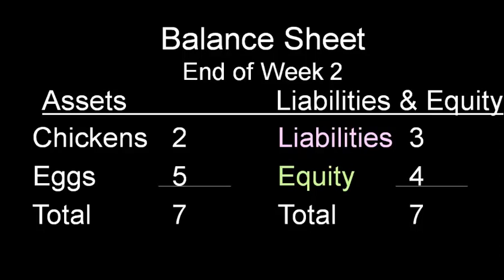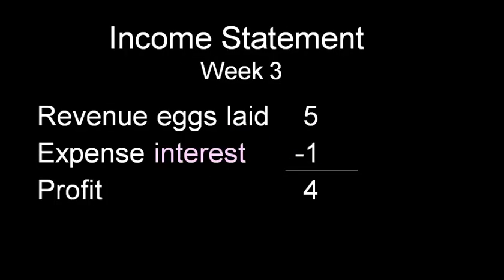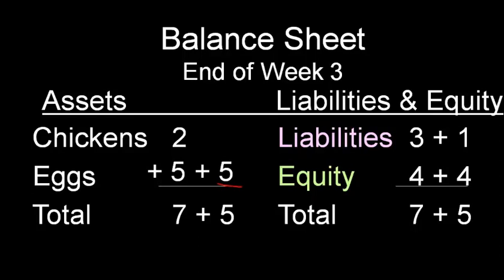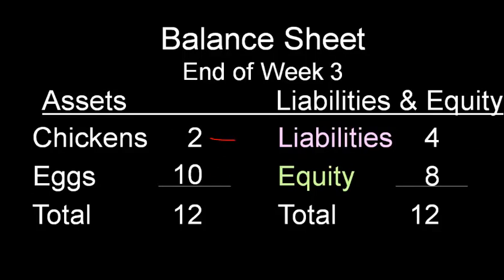Here is our balance as of the end of week two: we've got two chickens and five eggs. Of the seven, our lender has a claim of three and four is the company's to keep. It's week three and it's been a good week — our chickens have laid five eggs. We're being charged one by our lender, so the company gets to keep the difference, a profit of four. On our balance sheet, we add the five eggs in, add the one interest charge to the lender's liabilities, and the profit of four goes into equity. Both sides increase by five, and when we add it all up, we have two chickens and ten eggs for a total of twelve. Of the twelve, four is owed to the lender and eight is the company's to keep.